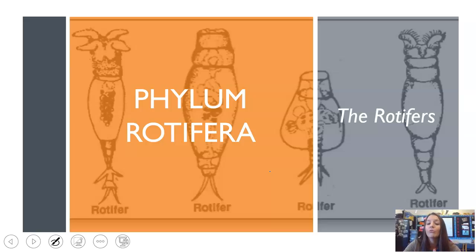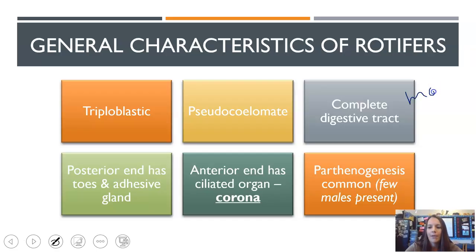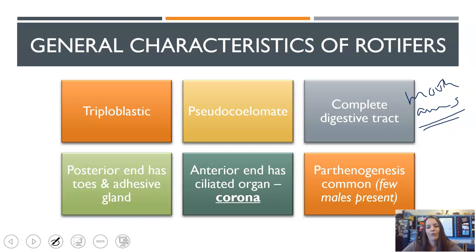Now let's move on to rotifers. Rotifers are pretty cool structurally and very different from flatworms. General characteristics: once again they are triploblastic, so three tissue layers. This time they are pseudocoelomate — they have some sort of body cavity but it's false, not a true body cavity like we have. They have a complete digestive tract, meaning there's a separate mouth and anus. They have a posterior end with little toes and adhesive glands to stick to surfaces. The coolest part is an organ called a corona at the top of their head with cilia that moves to filter-feed. They also do something called parthenogenesis, which is reproduction from unfertilized eggs.